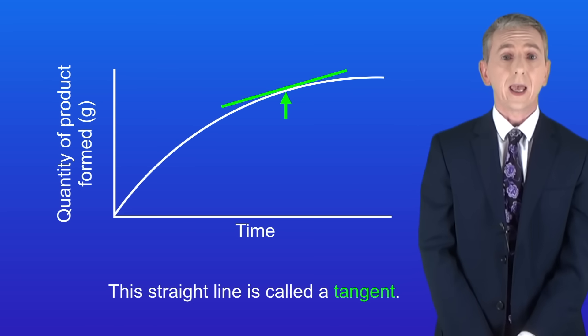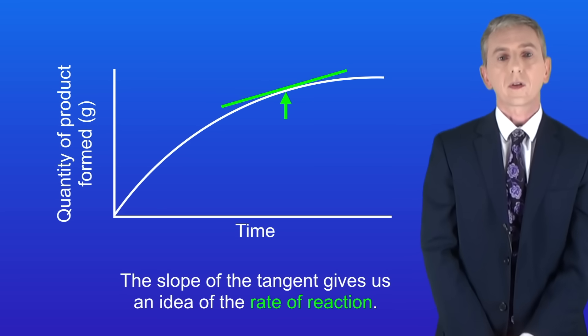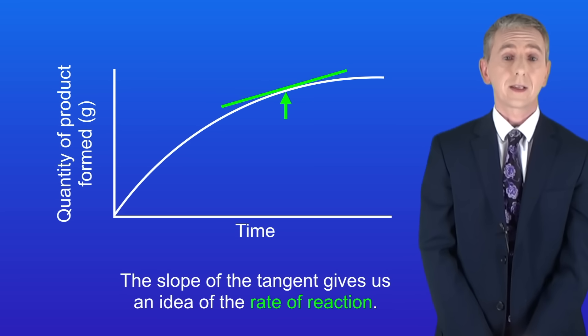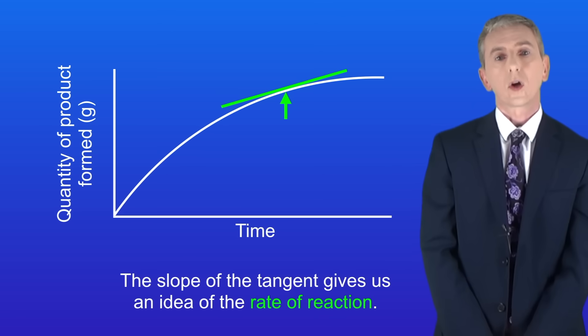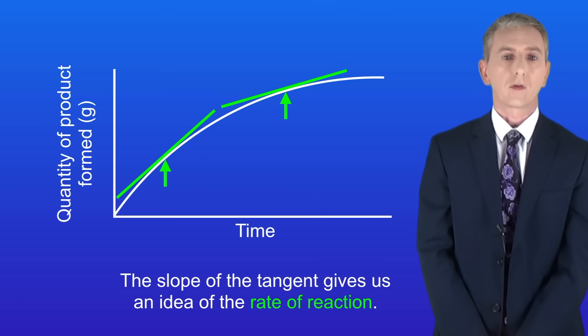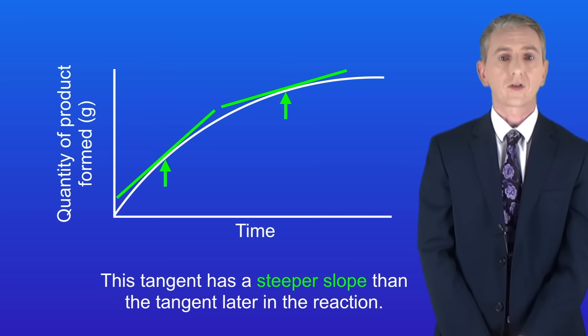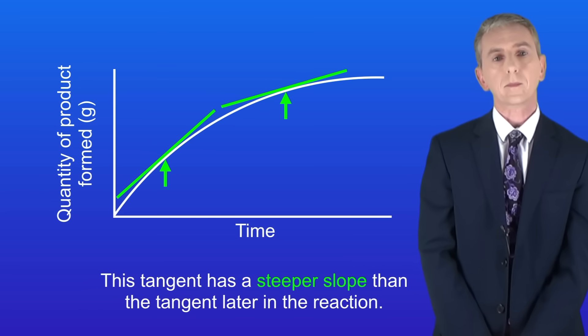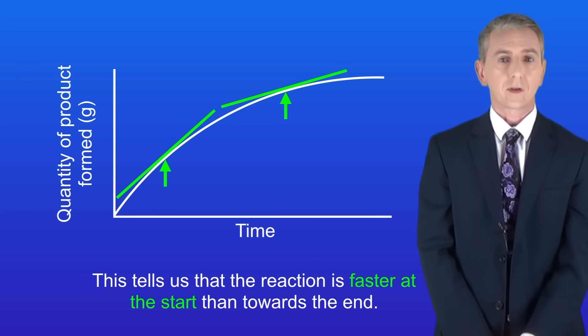We can draw a tangent at any point on the curve and the slope of the tangent gives us an idea of the rate of reaction. So here I'm drawing a tangent towards the start of the reaction. As you can see this tangent has a steeper slope than the tangent later in the reaction. This tells us that the reaction is faster at the start than towards the end.